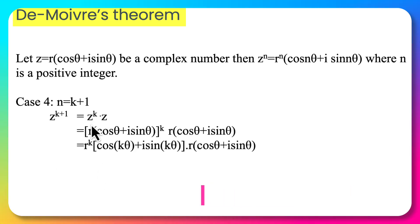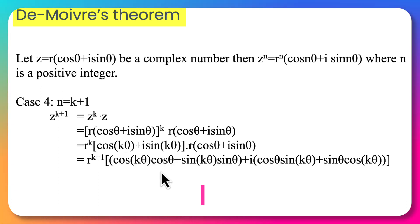Since z^k is already proved in the hypothesis step, we multiply it by ordinary multiplication and will get r^(k+1) times the quantity (cos(kθ + θ) + i sin(kθ + θ)).